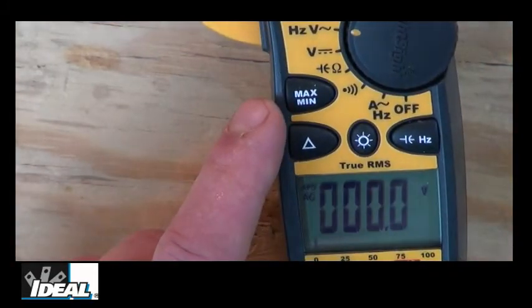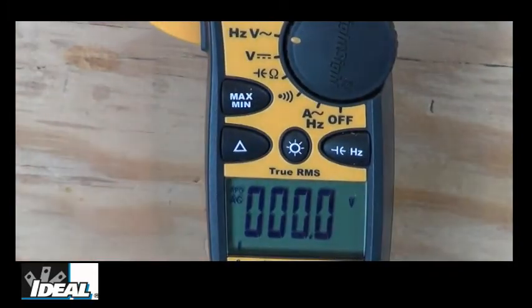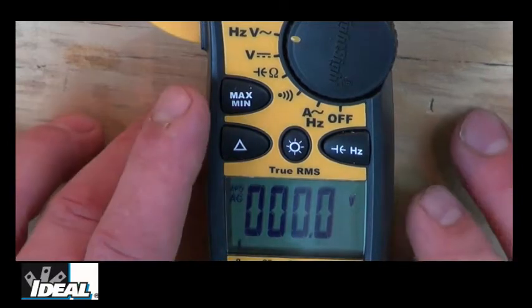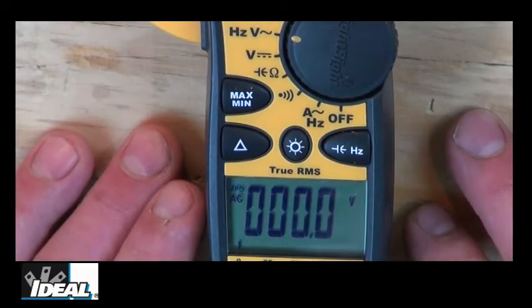You see the tester also has a min and max button on it, which is a really nice feature. And it will record the minimum or the maximum over a period of time of what it might have been reading. And you can do it for longer periods of time because the tester has an auto power off feature and automatically powers itself off in 30 minutes. But you could disable that and for a longer period of time, you can record those minimums and maximums, which is another nice feature you don't find on a lot of clamp meters.